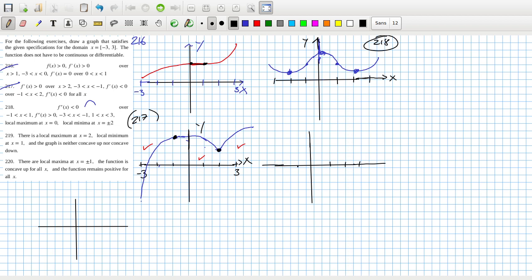OK. One, two, three. One, two, three. Two, one, nine. There's a local maximum at two. A local minimum at one. And, the graph is neither concave up, nor concave down. So, it could be something like this, I guess. Because the second derivative is zero. So, I think that's what they're doing there. A little bit sneaky, maybe. Two, twenty.